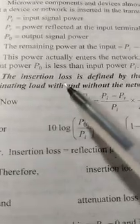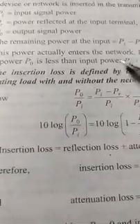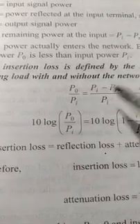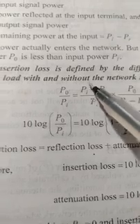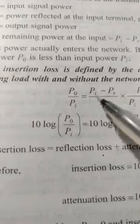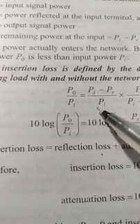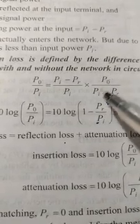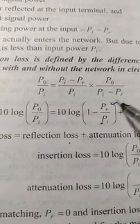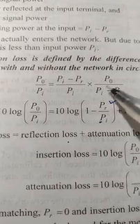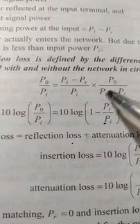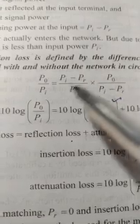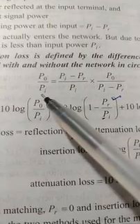Here we are defining insertion loss. Output power divided by input power equals the power which has gone inside the device divided by the input power, multiplied by the output power divided by the power that has actually gone inside the device. That is P0 by Pi.